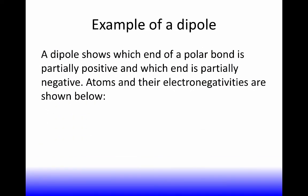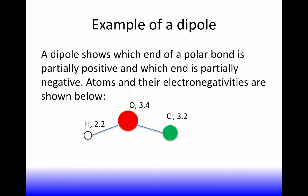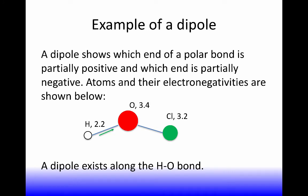Here's an example of a dipole. A dipole shows which end of the polar bond is partially positive and which is partially negative. I've got an oxygen atom with electronegativity 3.4, a chlorine atom with 3.2, and a hydrogen atom at 2.2. There is a dipole along the H–O bond: the difference between 3.4 and 2.2 is 1.2, which is clearly in the range for a polar covalent bond. The O–Cl bond, with values 3.4 and 3.2, are very close so they're considered a nonpolar covalent bond. The arrowhead points towards the oxygen since it has the larger value, and the tail points towards the hydrogen since it has the smaller value.